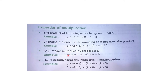Teesri property: any integer multiplied by 0 is 0. 0 ko kisi bhi integer se — chahe wo negative ho ya positive — multiply karein, answer 0 aayega. Jaise 0 into minus 7 = 0, aur 0 into 100 = 0. Yeh properties questions mein bhi apply hongi.